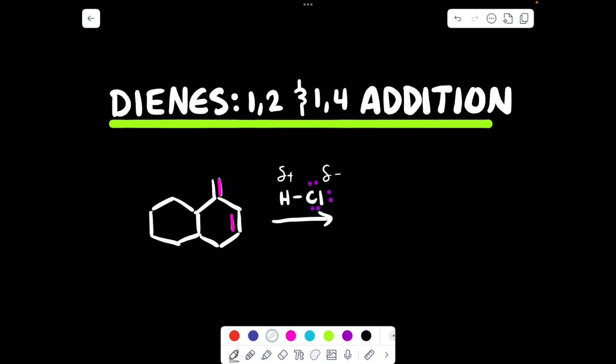Where this diene is in the S-transoid conformation right now. Where if we follow the path of the double bonds apart of the diene: 1, 2, 3, 4. I'll highlight it. 1, 2, 3, 4. If I draw this over here, what do I get? I get a zigzag or a chair or a lightning bolt. However you want to look at this.